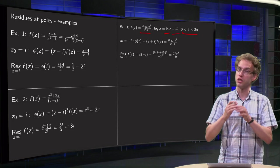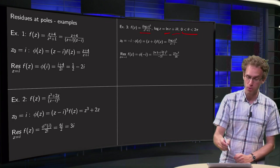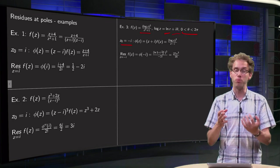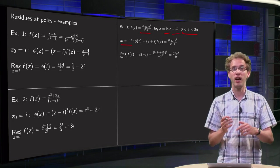Then, the branch cut is safely away from our pole, which is for example at z zero equals minus i. We compute the residue at minus i.